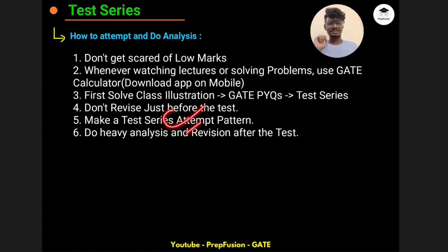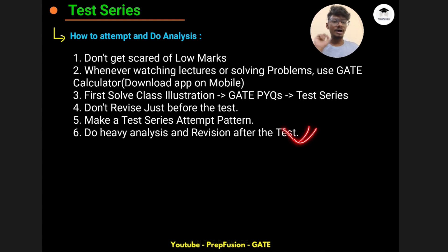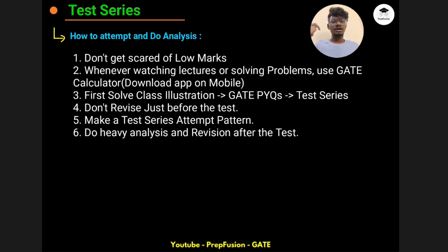After attempting the test series, do a heavy analysis and revision. First you get your solutions showing which questions went wrong and which were correct. Go into the correct questions section and mark those questions as favorites or take a screenshot — store them somewhere. Later, when you feel you're forgetting a concept or chapter, go back and attempt those questions to revise the concept, practice questions, and recall formulas — three things at once.